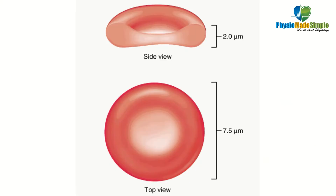This picture shows the side view and the top view of RBCs. The side view shows the biconcavity precisely, with a thin center and thick periphery. The two micrometers specified on the side represents its thickness. In the top view, the center portion is pale and the peripheral portion is dark colored. The measurement of 7.5 micrometers is the diameter of a normal RBC.